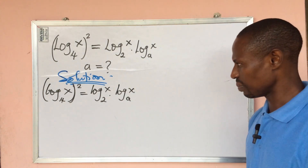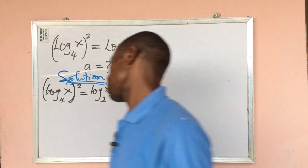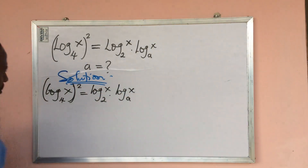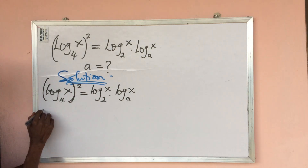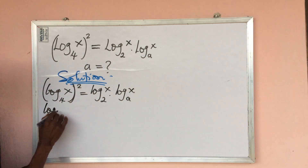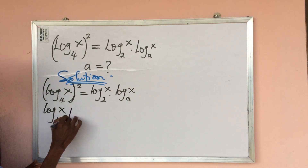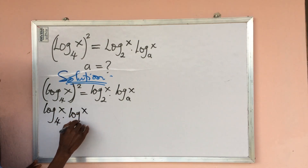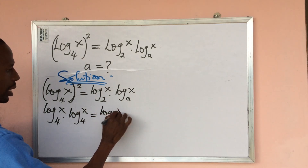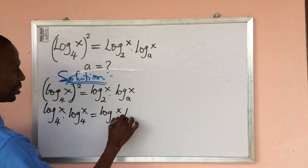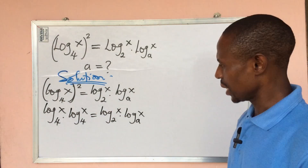So how do we simplify this logarithm? I will rewrite this expression. This can be written as: log x base 4 times log x base 4 equals log x base 2 times log x base e.